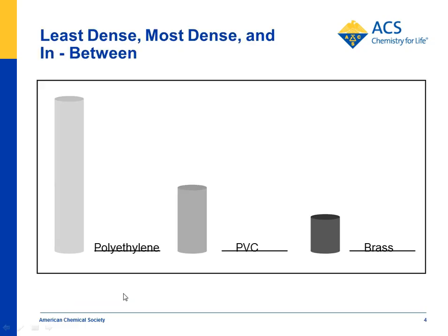Students realize that the least dense rod is the one with the greatest volume — that's polyethylene. The most dense is the one with the smallest volume, which was brass. And PVC, polyvinyl chloride, is in between.